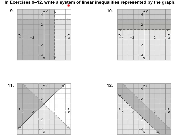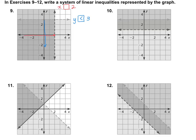In these last four problems, we need to write the system of linear inequalities represented by the graph. For number 9, my double shaded area is here. For the first equation, y is less than 3, because the shading is everything below that line and it's a dashed line — so it's less than, not less than or equal to. For the second line, x is less than 2, because it crosses at 2 and everything to the left is shaded, also with a dashed line. So the system is x less than 2 and y less than 3.